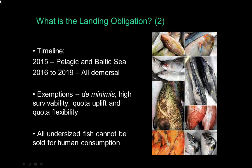Before we dig deeper into the manual itself, I'd just like to complete the scene setting. The regulation is being phased in, beginning with pelagic species and species in the Baltic Sea in 2015, and will extend to demersal species in all areas between 2016 and 2019. In the regulation, we have a raft of exemptions available intended to ease some of the practical implementation, and there are also rules and restrictions on how undersized fish can be marketed. Regional member state groups with input from the relevant advisory councils have finalized their recommendations on how the landing obligation should be phased in for the more complex situations in commercial fisheries.